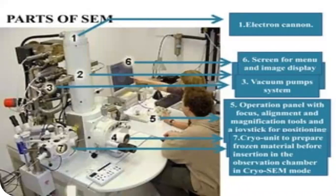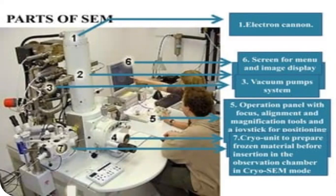Next, I will discuss parts of the scanning electron microscope. First, electron cannon; a screen for menu and image display; vacuum pump system; operation panel with focus, alignment, and magnification tools; object positioning; and lastly, a cryo unit to prepare frozen material before introduction into the observation chamber in cryo scanning electron microscope mode.